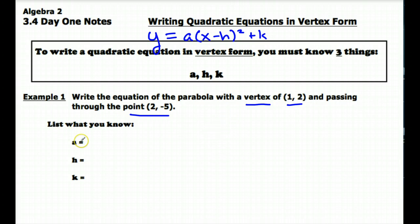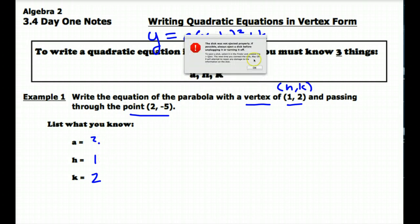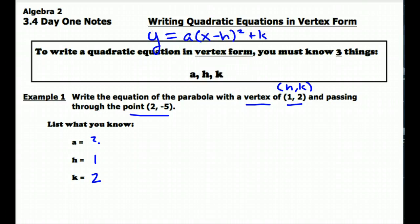Based on this information we're going to list what we know of a, h, and k. Since I'm giving you the vertex, the vertex in vertex form is always (h, k). So really what I'm doing here is giving you two out of these three values — h is equal to 1 and k is equal to 2. The only thing we need to worry about is finding a, and to do that we're going to use our vertex form: y equals a times the quantity x minus h squared plus k.